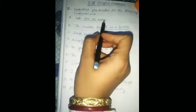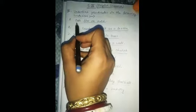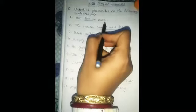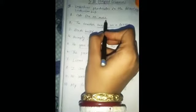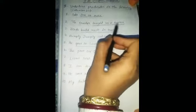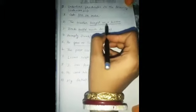Number 1. Cats live on mice. Here, subject is cats. Live on mice is the predicate. So, underline the predicate. Number 2. The teacher taught us a lesson. The teacher is the subject. Taught us a lesson is the predicate. Underline the predicate.